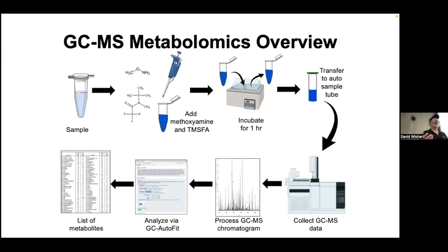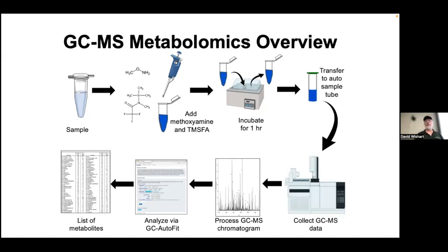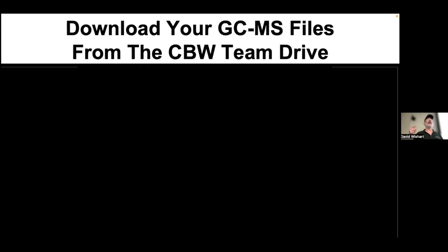That's the NMR one. At the same time, there's going to be a GCMS group. Your focus is processing the GCMS chromatogram using GC AutoFit to get your metabolite list — the sample collection work was done for you. If you're in the GCMS group, your name is on the list. Download your GCMS file from the link on GitHub or Slack.